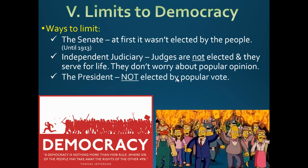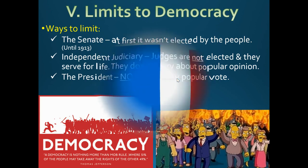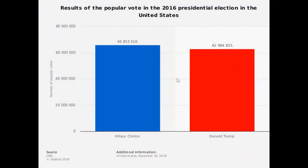All federal judges — not just the Supreme Court — are in there for life. And here's something crazy: the president is not elected by popular vote. The president is chosen by something called the Electoral College. For example, Hillary Clinton in 2016 beat Donald Trump by 3 million votes but did not win the presidency because of where the votes were. We'll talk more about that later.